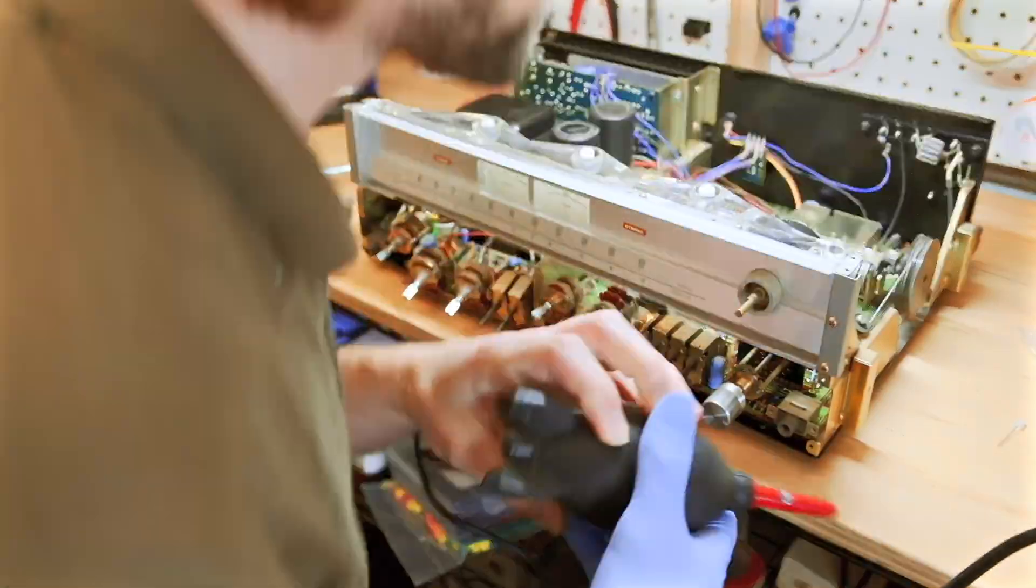I started by removing loose dust from the board, then sprayed a quick dry contact cleaner into the controls. Once it was dry, I lubricated the potentiometers with Deoxit F100 and the switches with the Deoxit D100L.